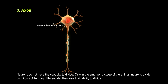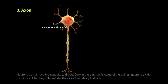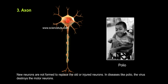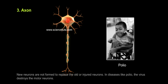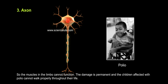Neurons do not have the capacity to divide. Only in the embryonic stage do neurons divide by mitosis. After they differentiate, they lose their ability to divide, and new neurons are not formed to replace old or injured neurons. In diseases like polio, the virus destroys the motor neurons, so the muscles in the limbs cannot function. The damage is permanent, and children affected with polio cannot walk properly throughout their life.